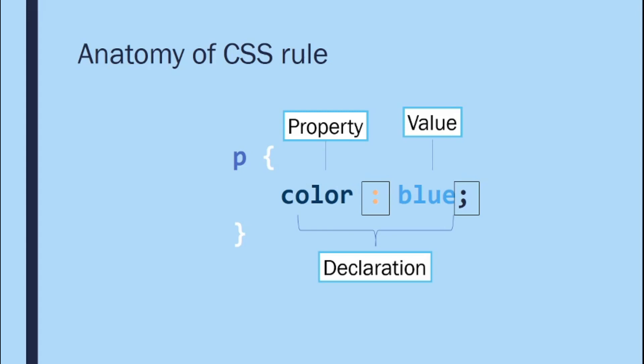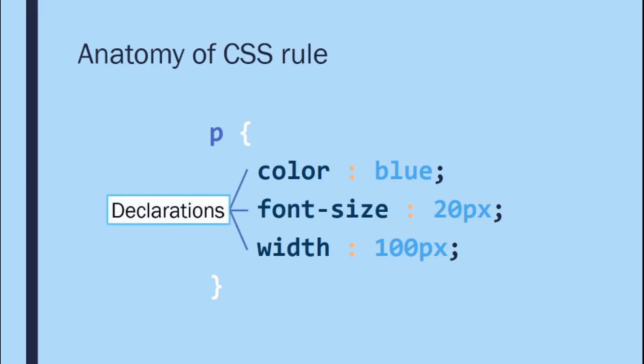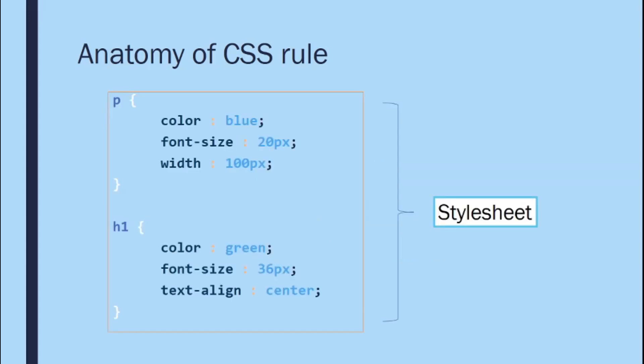A certain rule can have many declarations. For example: all paragraphs will have color blue, font-size 20px, and width 100px. A combination of CSS rules is called a style sheet. You can have multiple rules — for example, one for 'p' and one for 'h1'. A style sheet should have at least one rule to be useful.